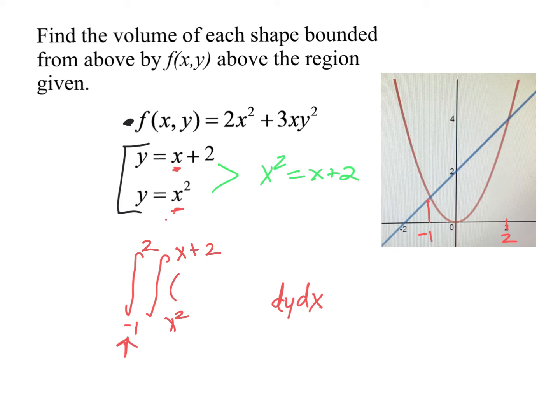We've got 2x squared plus 3xy squared. You'll remember that, it's dy, so therefore we treat x as though it were a constant. So our first integral, of course, will just be 2x squared y. Plus, we're going to, 3x is a constant. We raise the power on y squared and divide. So it actually will be x y cubed. We're going to evaluate this at x plus 2 and x squared.